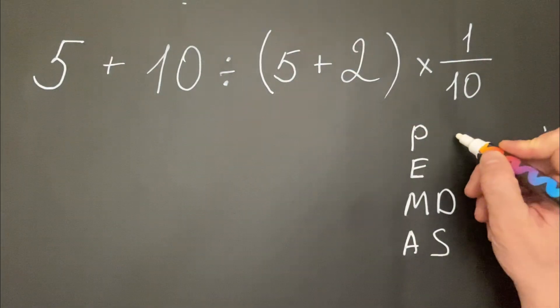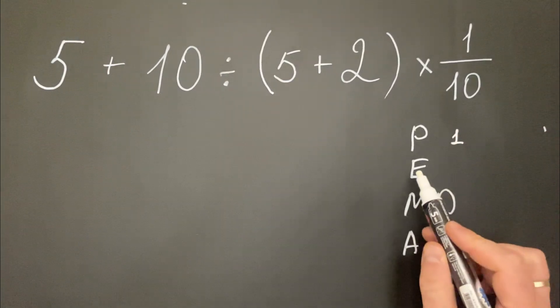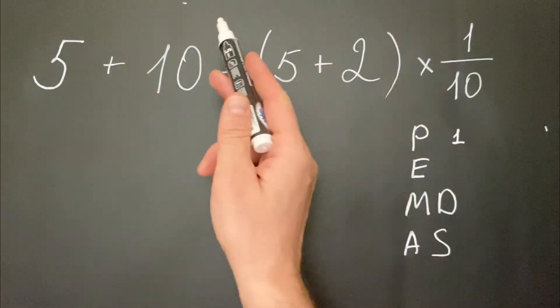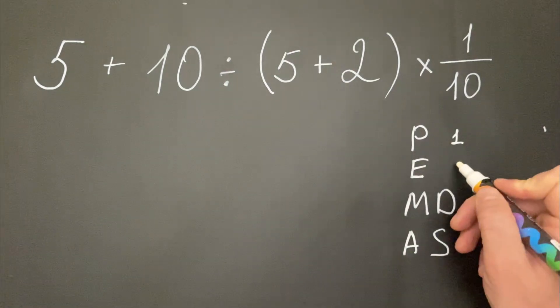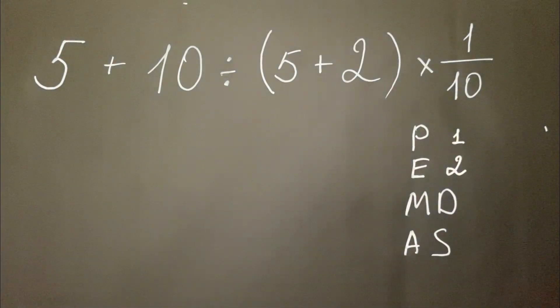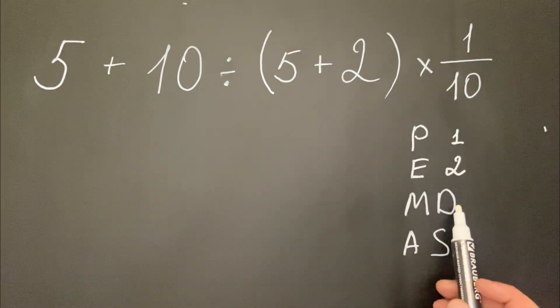Parentheses must be done first. Then we have E, which stands for exponents, but we don't have it here. If we had it, it must be done second. Then we get multiplication and division.